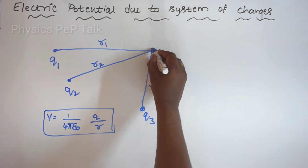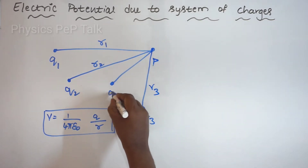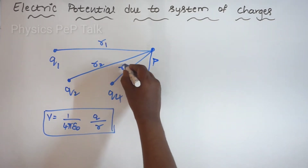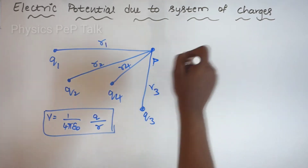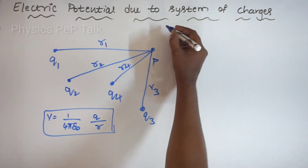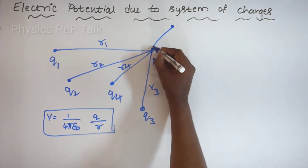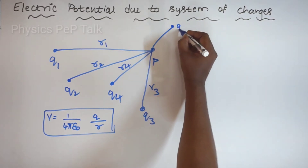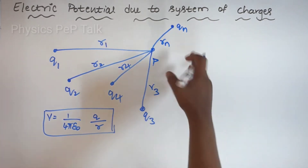Another charge Q4, with distance of separation R4. And we continue up to the last charge, which we will call as Qn, with distance of separation as Rn.